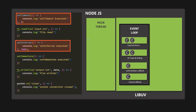If a timer expires while one of the other phases is being processed, the callback of that timer will only be processed when the event loop comes back to the first phase. For example, if the event loop is in the second phase and a timer expires, it will be stored in the first phase's callback queue but will not execute immediately. The event loop will finish the second phase, move to the third, then the fourth, and only then return to the first phase to execute that timer callback.